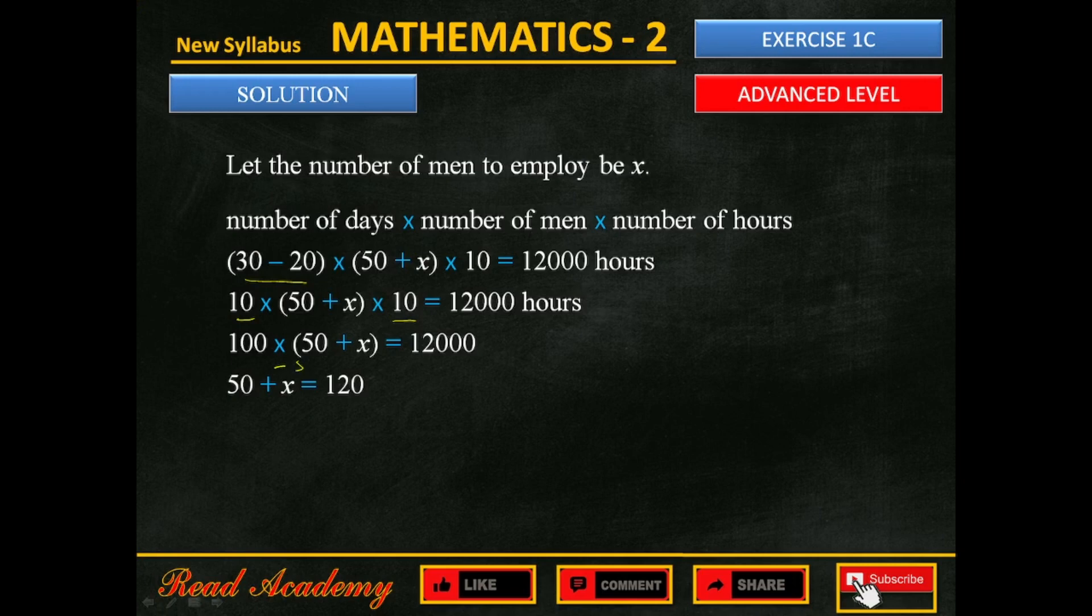Now, subtract 50 from both sides, and we get x equals 120 minus 50. So, x equals 70. Therefore, 70 more men need to be employed.